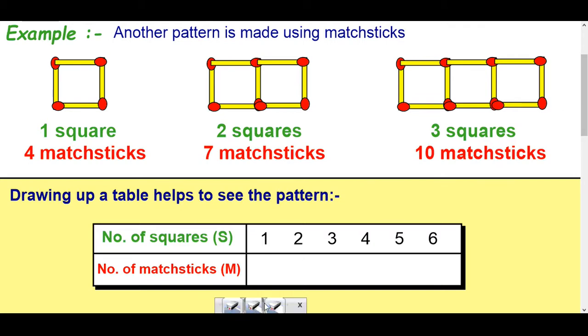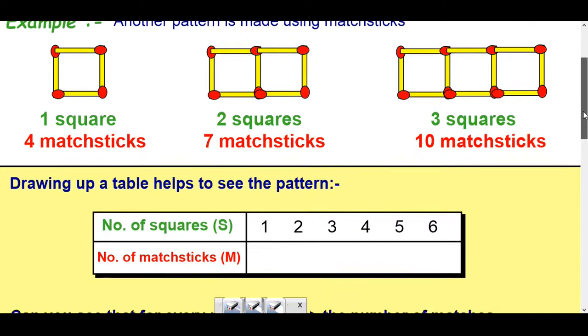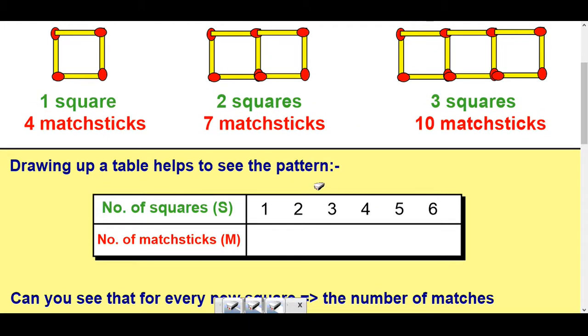So let's look at that in terms of a table, because the table will help us to get a formula. So we draw the table up and we say one square, four matchsticks, two squares, seven matchsticks, three squares, ten.